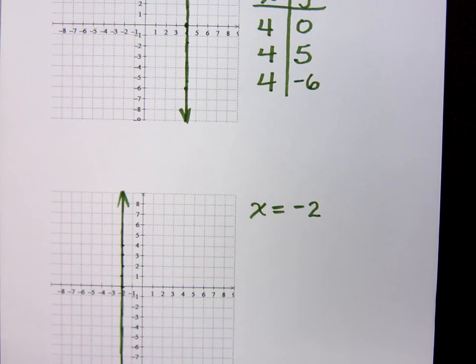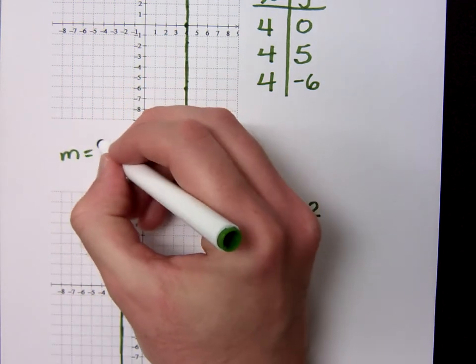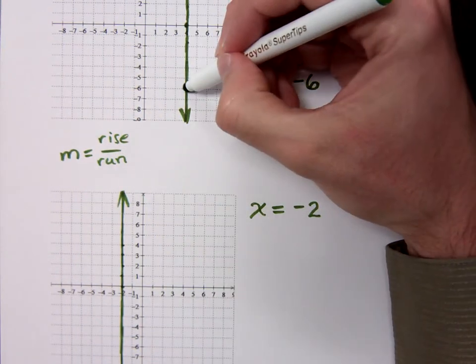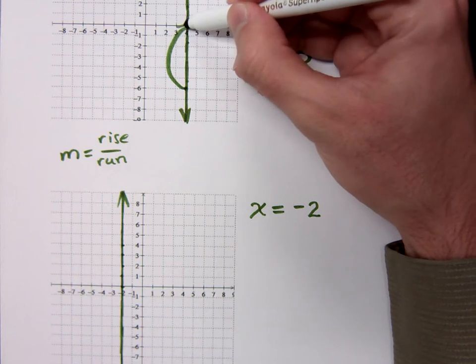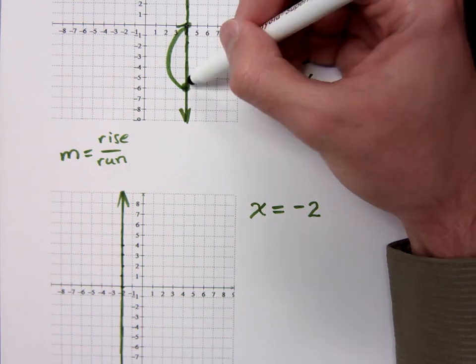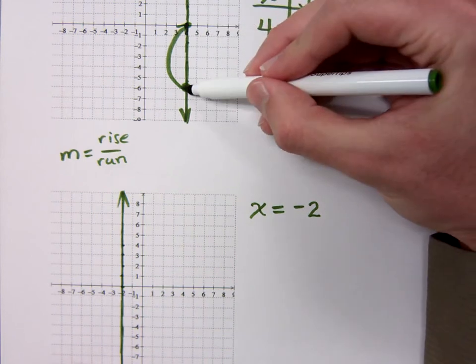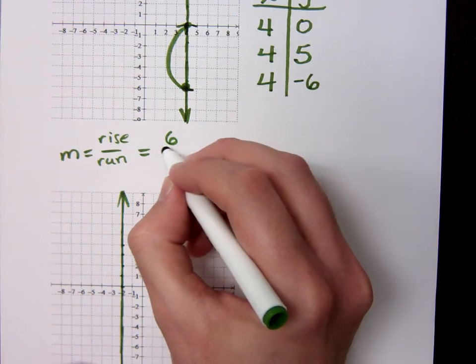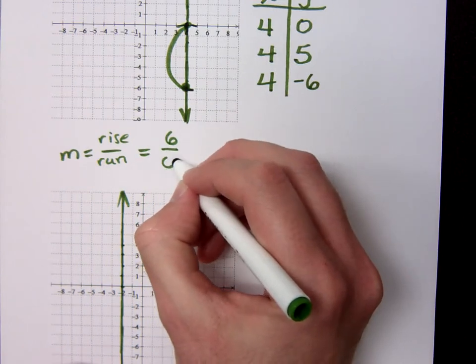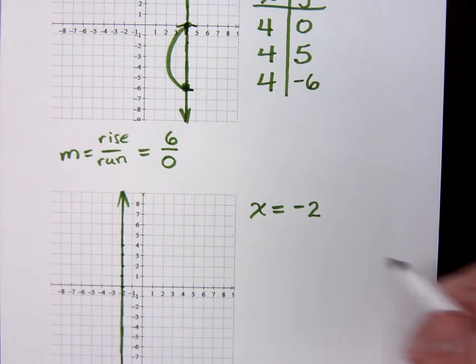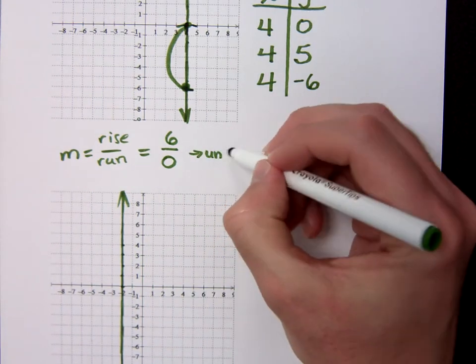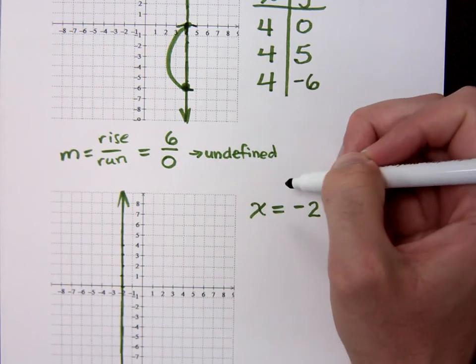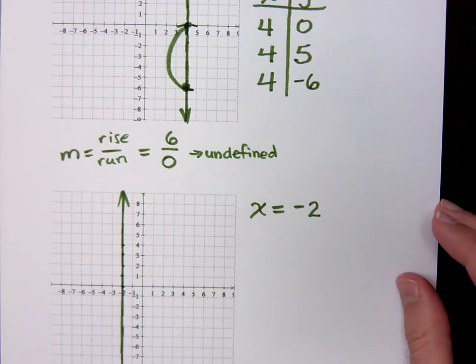So if I asked you to graph something like this, it shouldn't be that difficult. Now, what is the slope for a vertical line? You say undefined. Why is that? If I were to go from this point to this point, what's my rise? From here to here. That's a rise of 6. What's your run? Zero. What happens when you divide by zero? It's undefined. So you've got to remember that when your denominator is zero, then your expression is undefined.